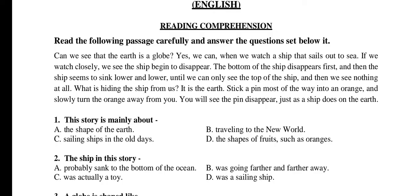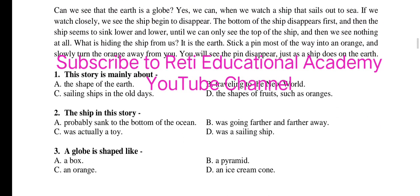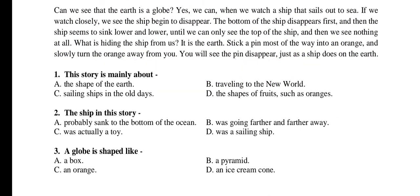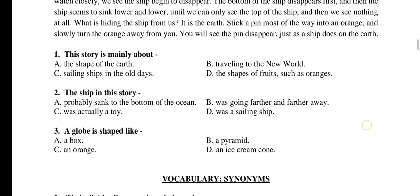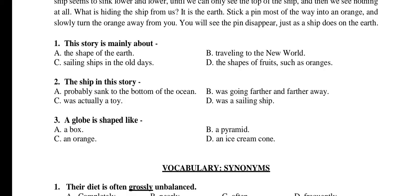Questions following the paragraph. Question 1: This story is mainly about — A) the shape of the earth, B) traveling to the new world, C) sailing ships in the old days, D) the shapes of fruits such as oranges. The right answer is A: the shape of the earth. Question 2: The ship in this story — A) probably sank to the bottom of the ocean, B) was going further and further away, C) was actually a toy, D) was a sailing ship. The right answer is B: was going further and further away. Question 3: A globe is shaped like — A) a box, B) a pyramid, C) an orange, D) an ice cream cone. The right answer is C: an orange.